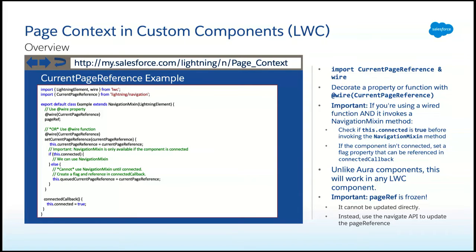The way to do this in LWC is actually better. The Aura version is only available to lightning component tabs and a few other scenarios where it owns the page. In LWC instead we use an @wire. You bring in wire from LWC and then bring in currentPageReference from lightning/navigation. This @wire is very helpful because now you can put it anywhere — in a flexipage or whatever — and obtain the current page's page reference. We recommend that if you're using this in conjunction with the NavigationMixin, make sure it happens upon connection. Have a boolean like isConnected in your property to track that.